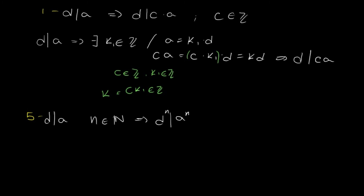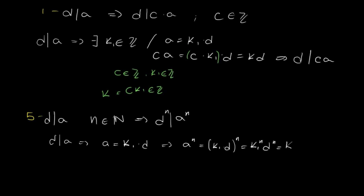Another easy property: if d divides a and we take any natural number n, then d^n divides a^n. Since d|a, we have a = k1·d. So a^n = (k1·d)^n = k1^n · d^n. Calling k1^n = k, we get a^n = k·d^n, which means d^n divides a^n.